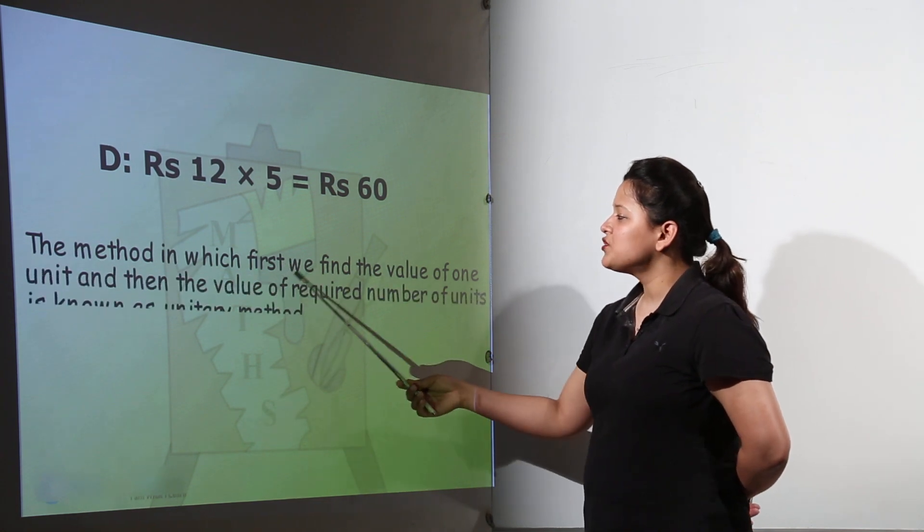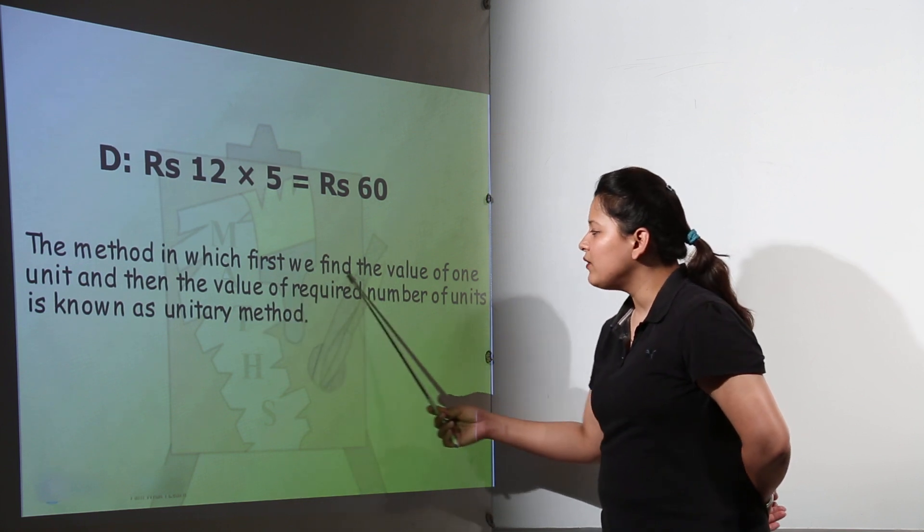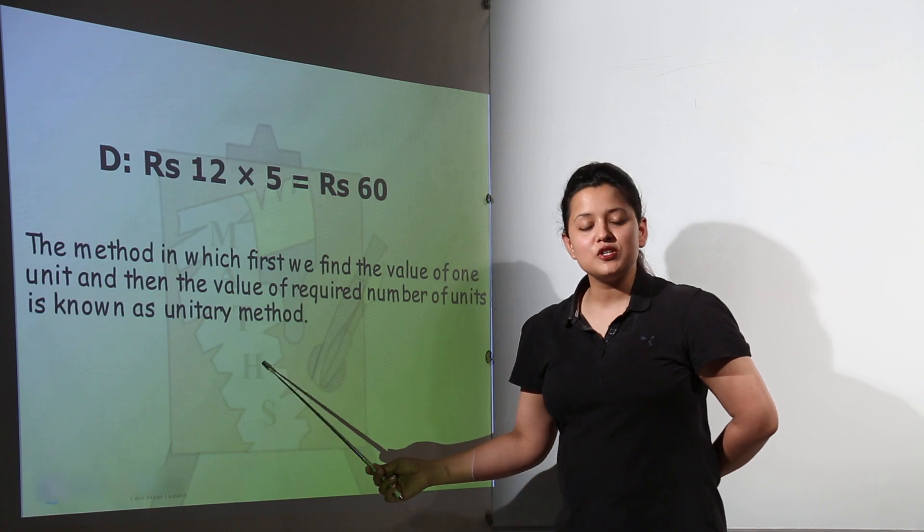The method in which first we find the value of one unit and then the value of required number of units is known as the unitary method.